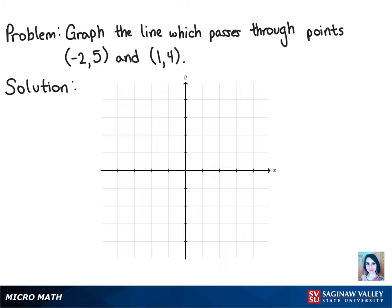To graph the line which passes through the points negative 2 comma 5 and 1 comma 4, we can start by plotting those points. So let's go to the left on the x-axis two spaces for that negative 2, and then we'll go up 5.